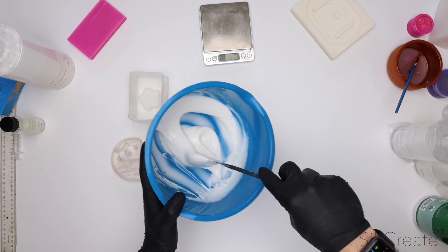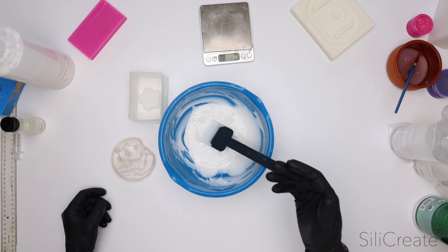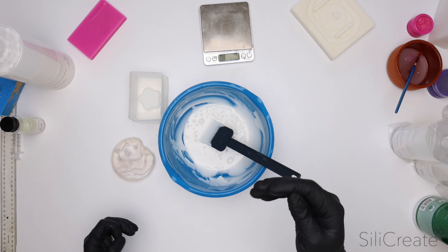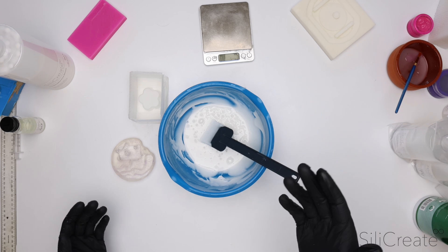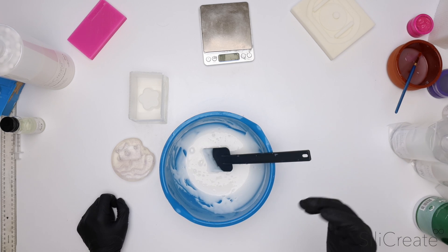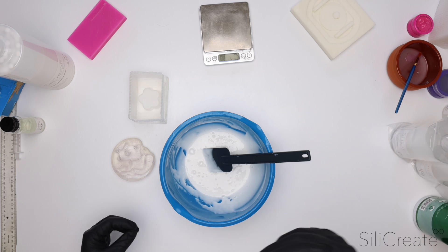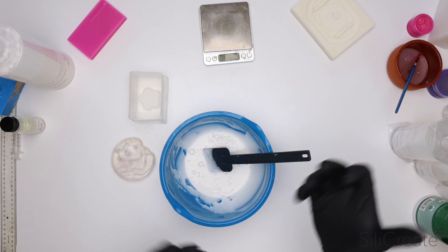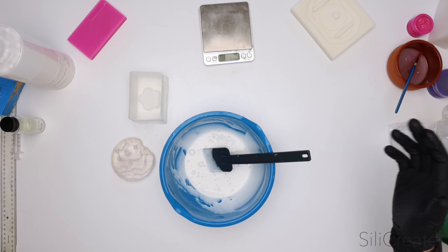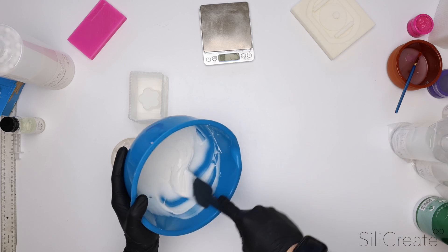Now the other big difference is cure inhibition. This is where silicon fails to cure against a surface. Generally the surface in contact will have a gummy or uncured layer, and platinum cure is very sensitive to a wide range of different chemicals. Before you do any sort of platinum cure mold against a material that you haven't used before, we recommend googling just to make sure that platinum cure is compatible. Tin cure you pretty much have no cure inhibition. It cures against almost everything. I think this is all mixed up.